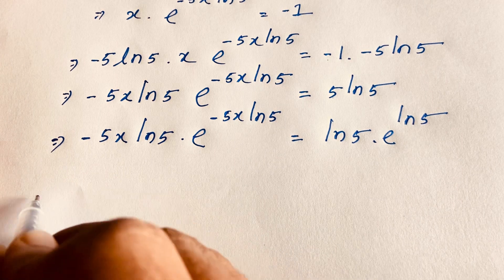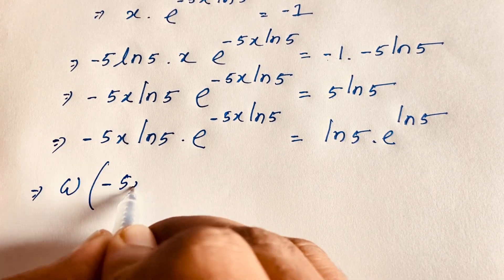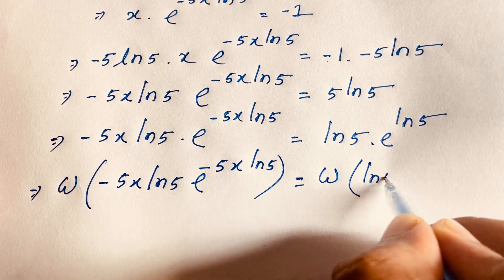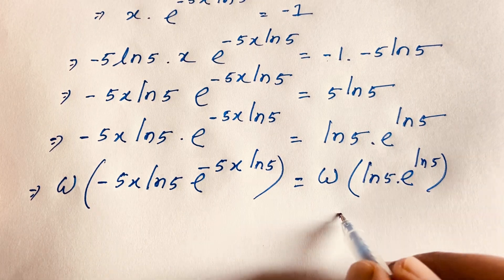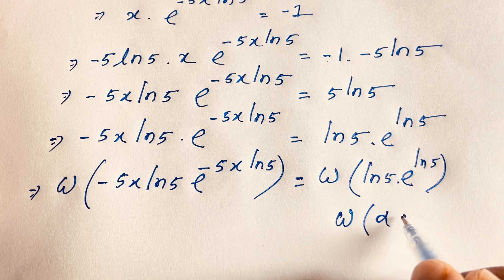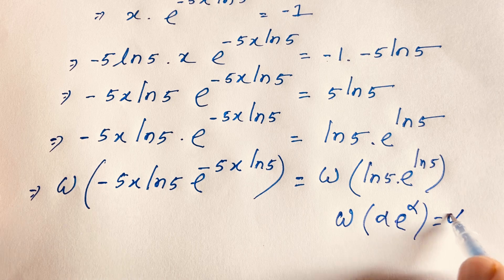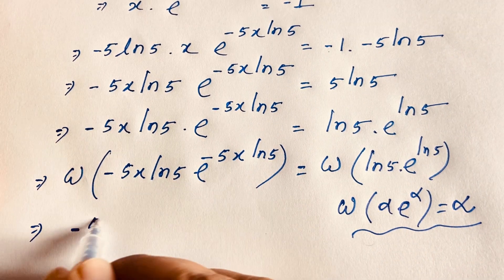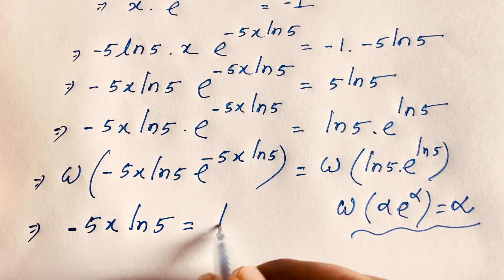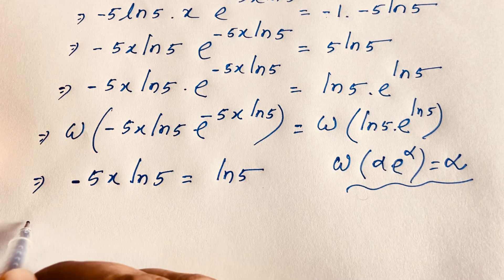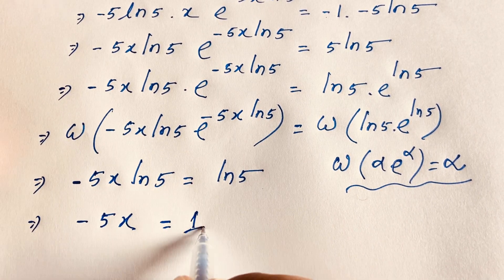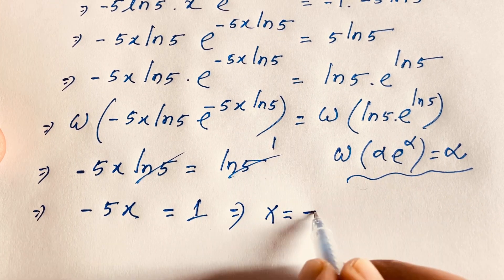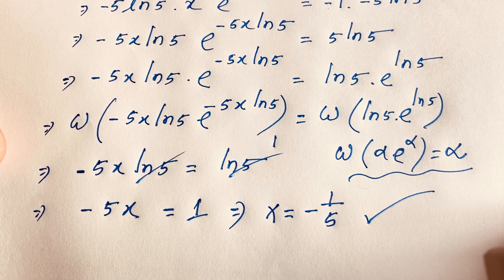Dividing both sides by ln 5, we find minus 5x equals 1. Dividing both sides by negative 5, we get x equals minus 1 over 5. This confirms our final answer from Method 2 as well.